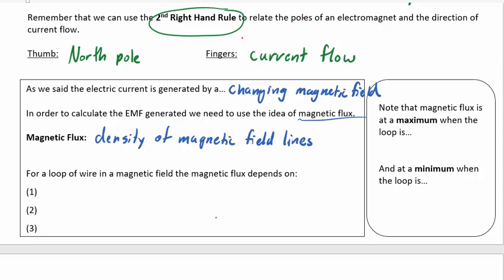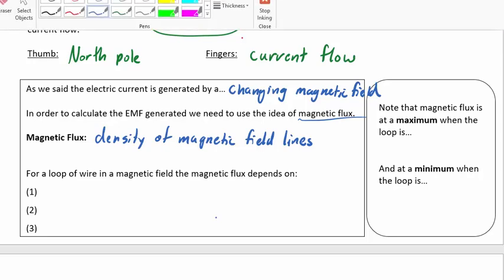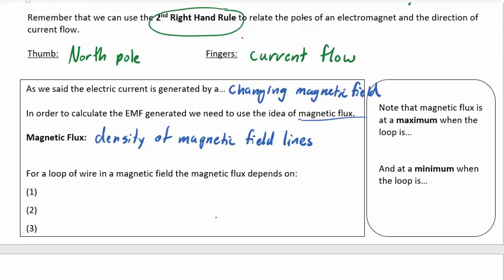And so if you think about a magnet that's generating a magnetic field, it has field lines coming out of it in all directions. And so if you have a loop of wire, only a certain number of those field lines are going to go through that loop of wire. And you can imagine that the number of field lines that actually make it through the wire are going to depend on a number of factors.